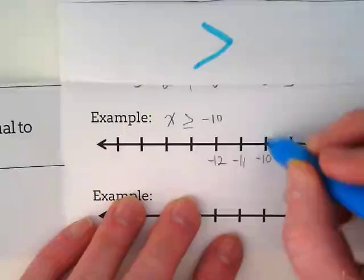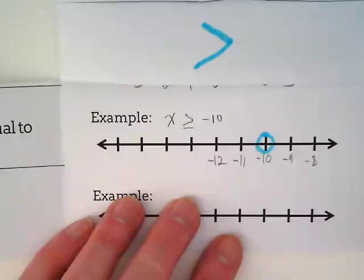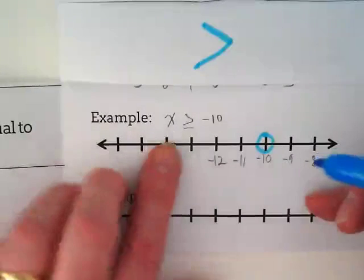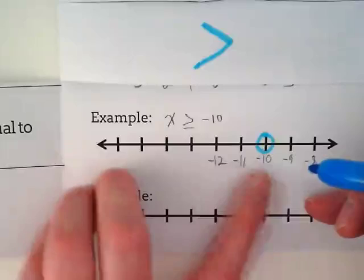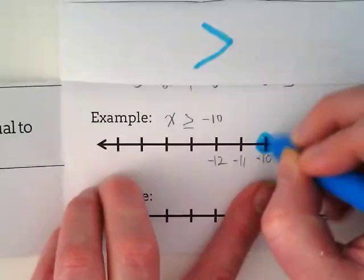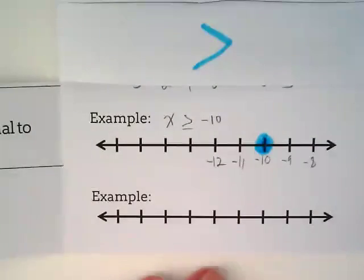I'm going to circle the negative 10. Solid or empty. It's greater than or equal to. So that means negative 10 would be an appropriate answer for this. So we circle it. We shade it in. And which direction does our line go?